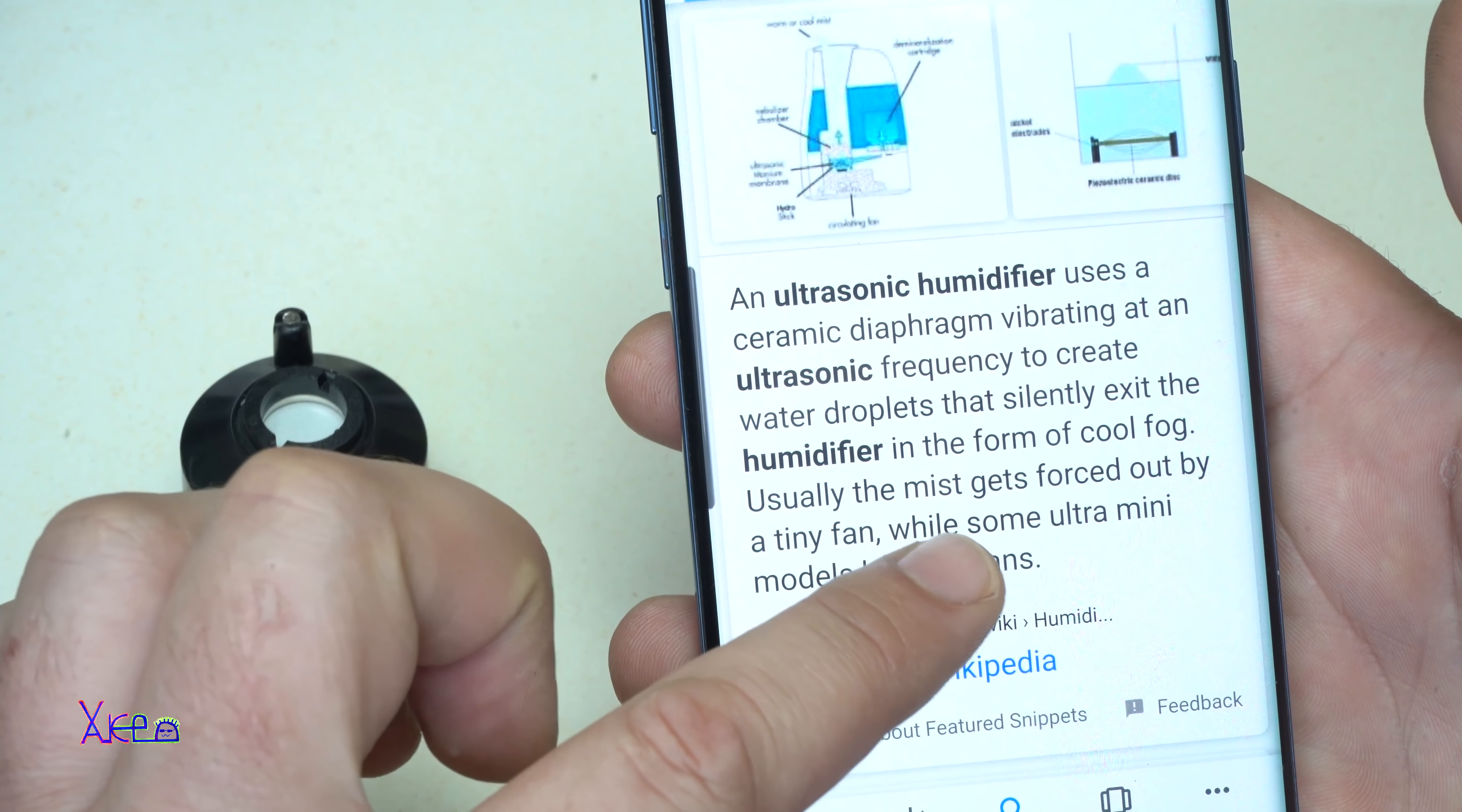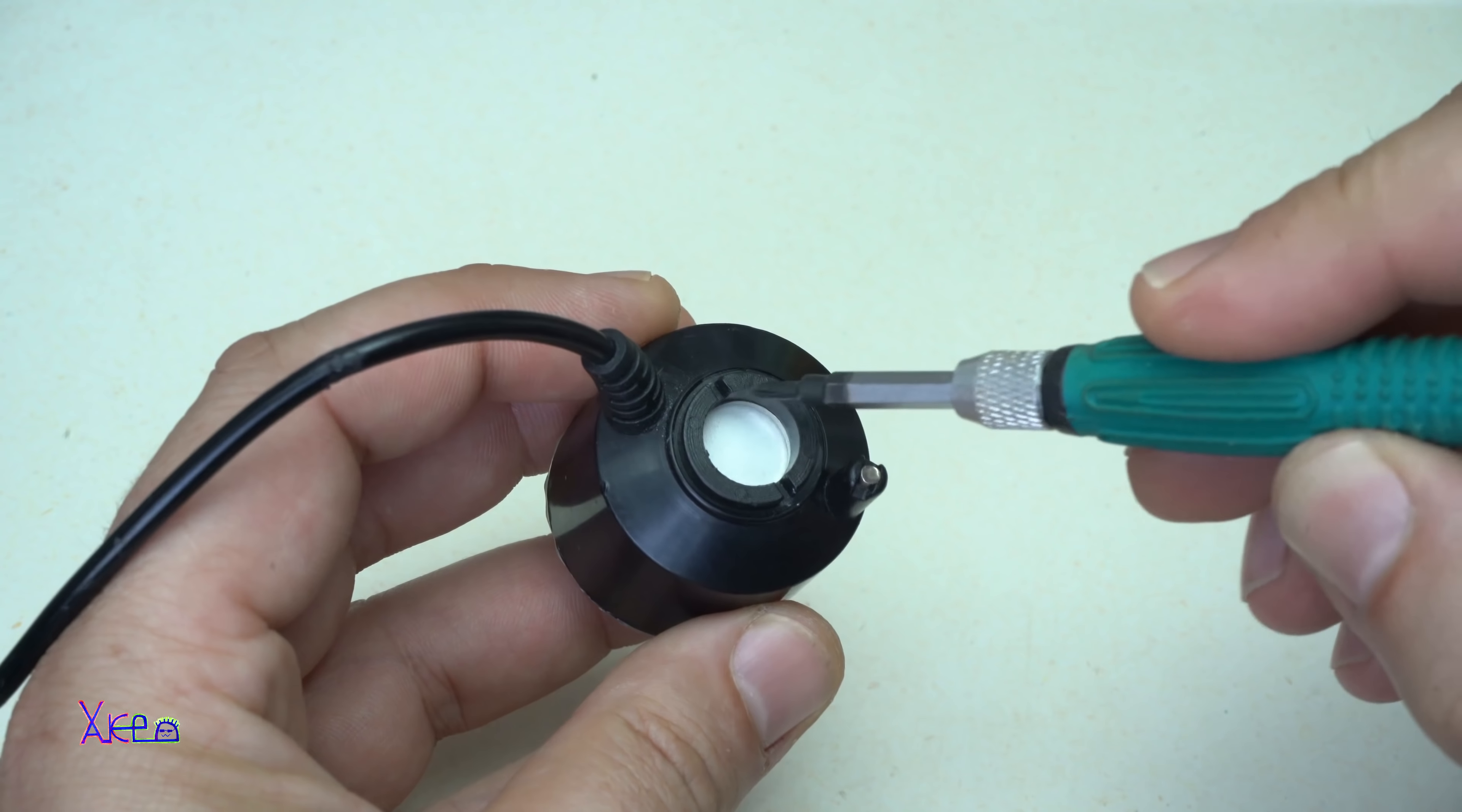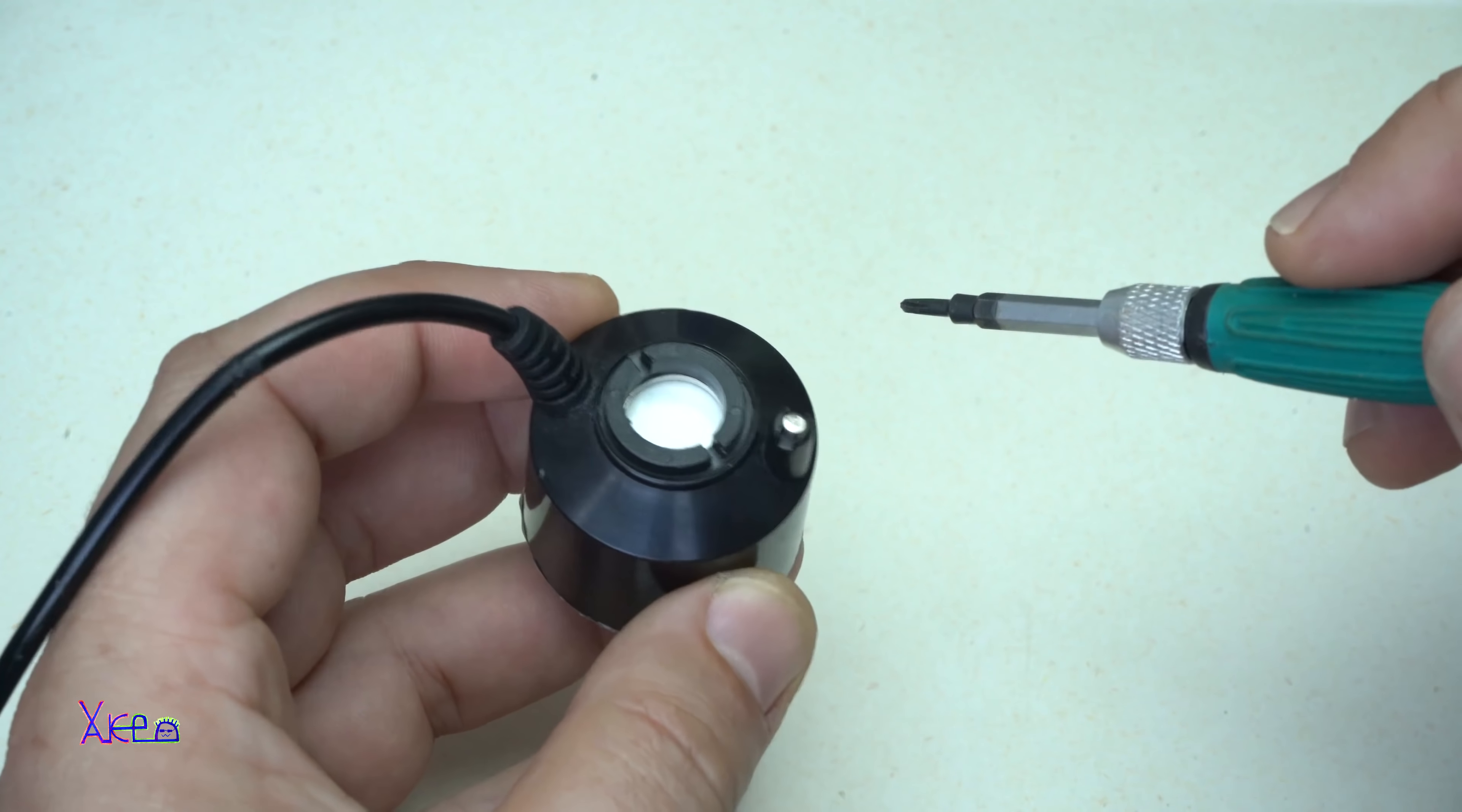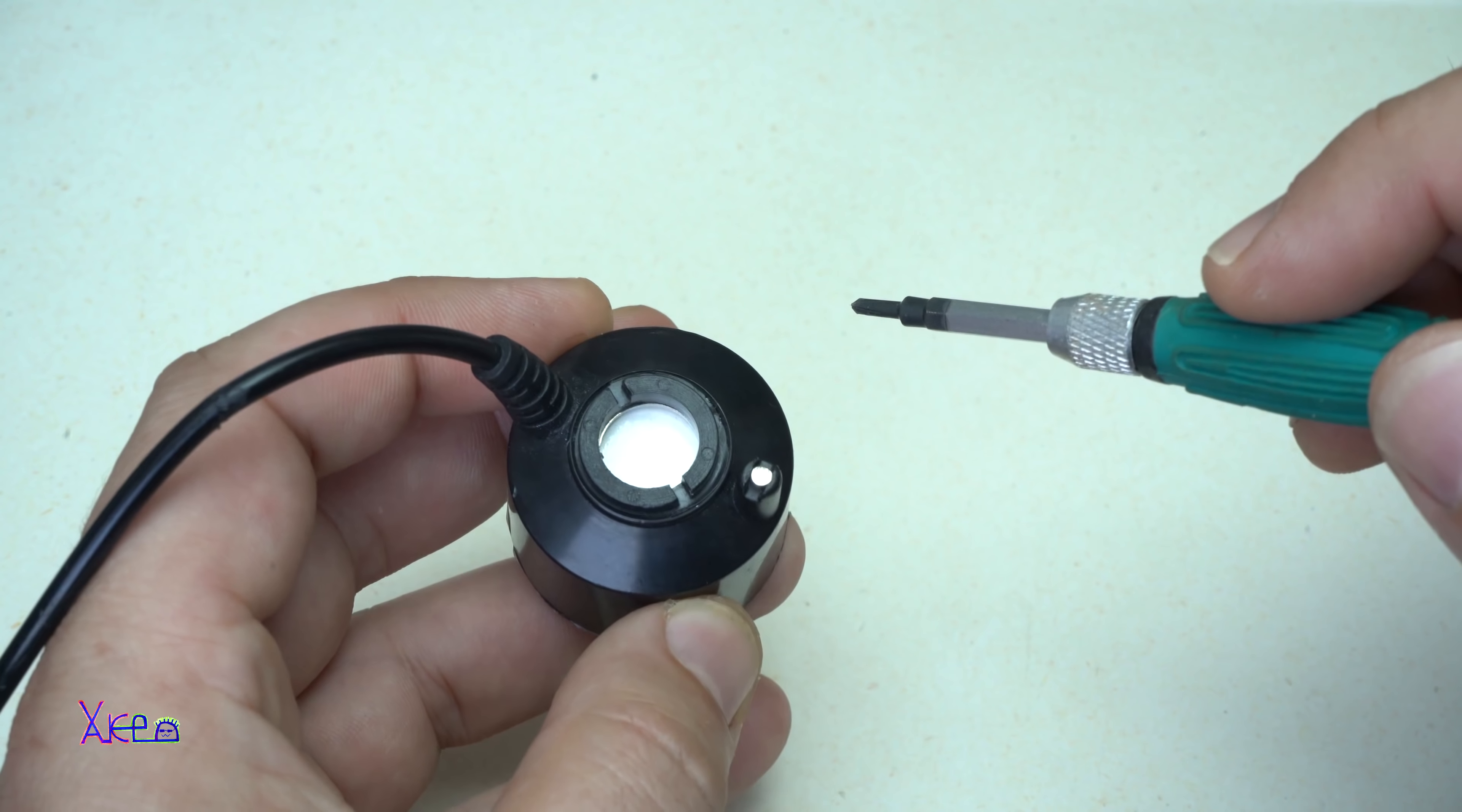Usually the mist gets forced out by a tiny fan, while some ultra mini models have no fans. The white plate is a diaphragm that vibrates very fast at very high frequencies, and that is the reason for making the mist or the fog.